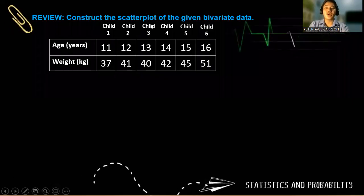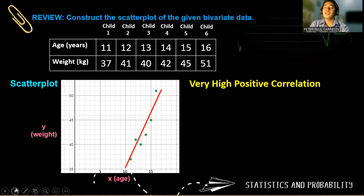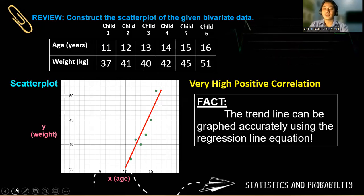So let's construct the scatter plot of the given bivariate data. Do you still remember this one in our previous lesson? We have child 1, 2, 3, 4, 5, and 6 with their respective ages and weight. And this is how we draw the trend line in this scatter plot. And we have defined its correlation analysis. It is very high positive correlation. So the trend line can be graphed accurately using the regression line equation.